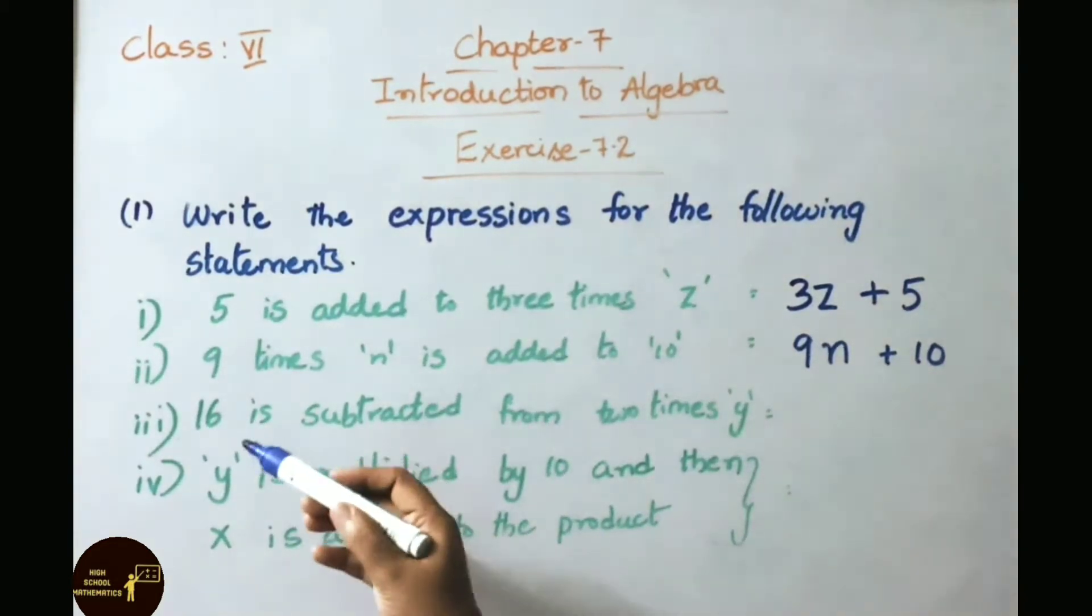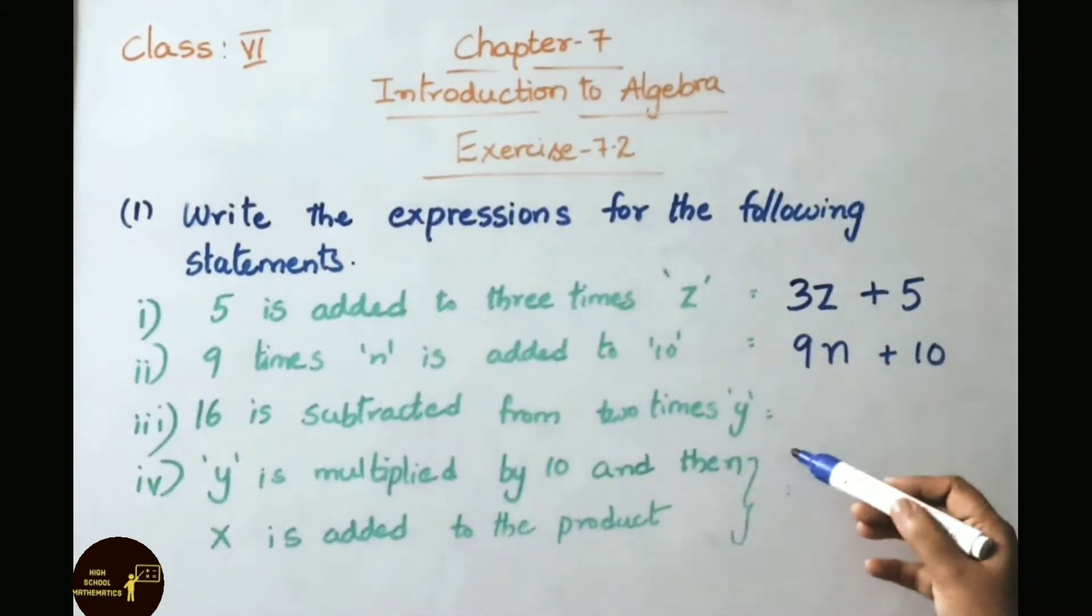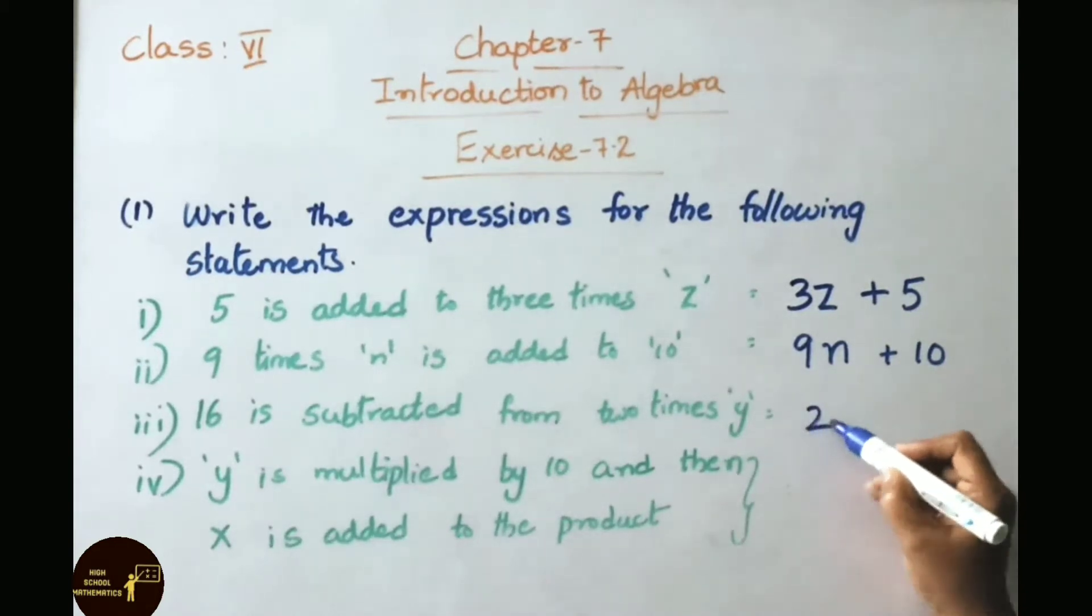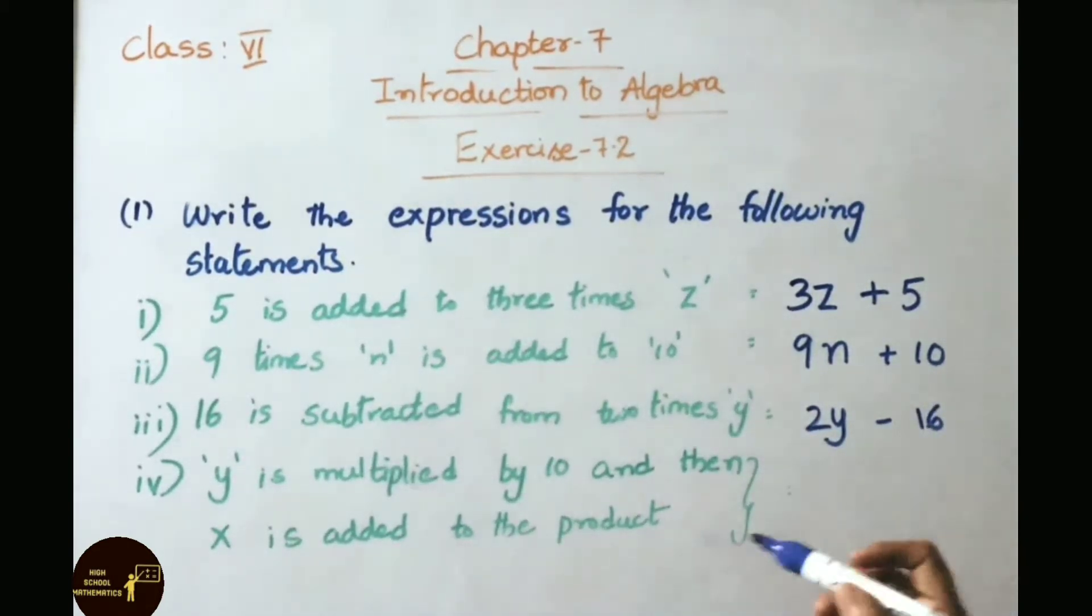See third one, 16 is subtracted from 2 times Y. 2 times Y means 2Y minus 16. So the rule is 2Y minus 16.